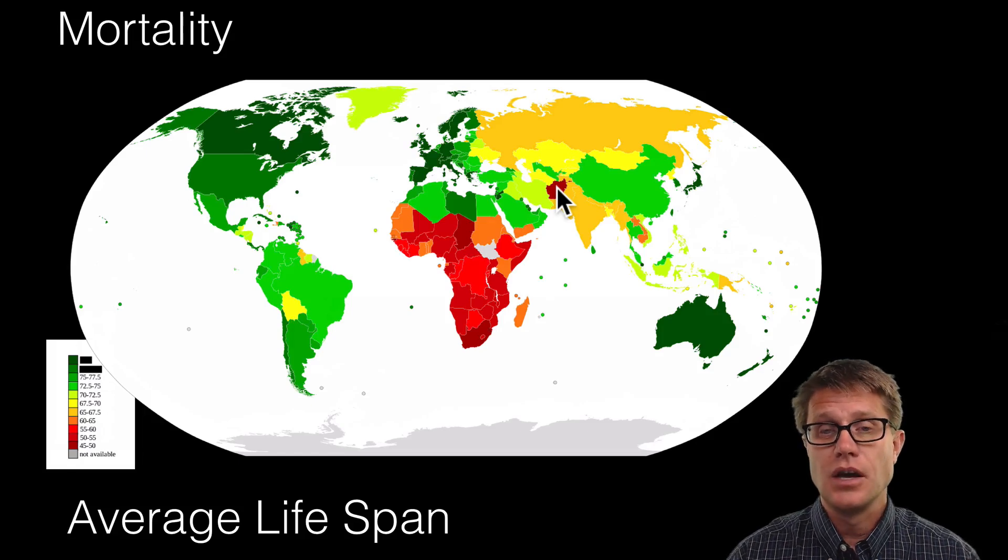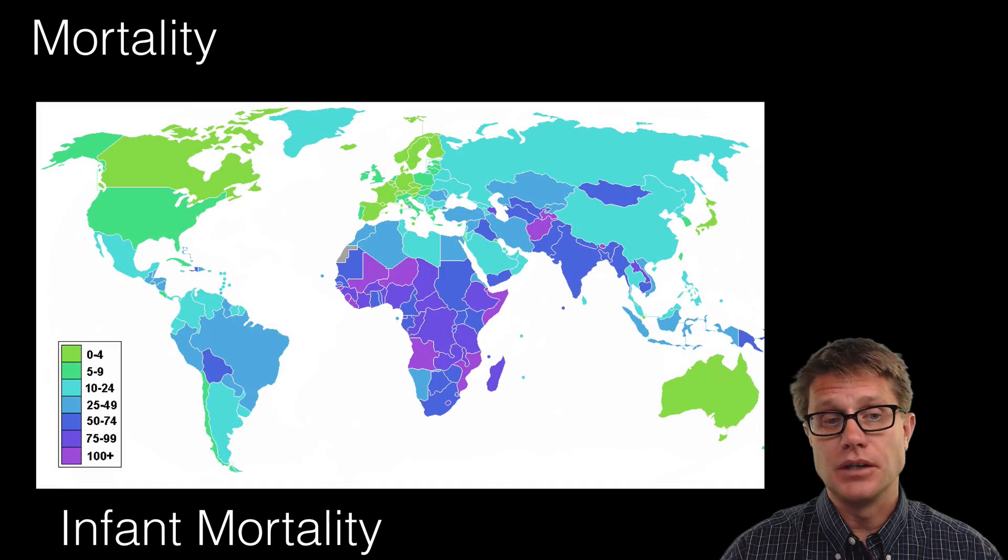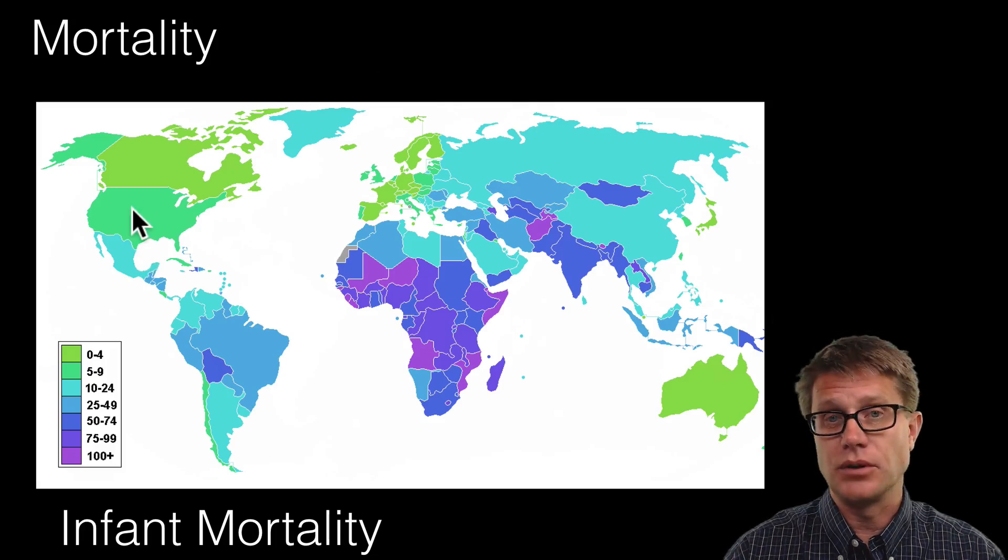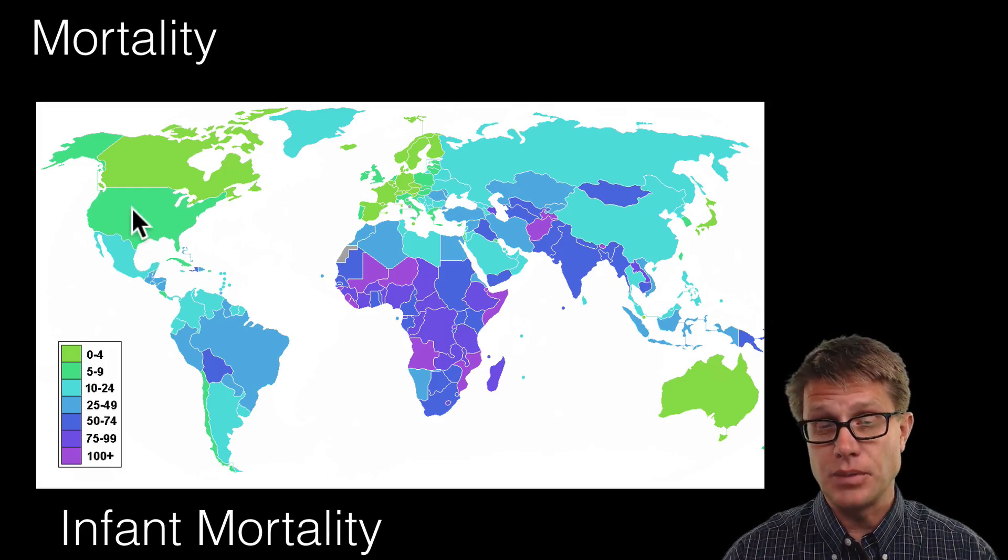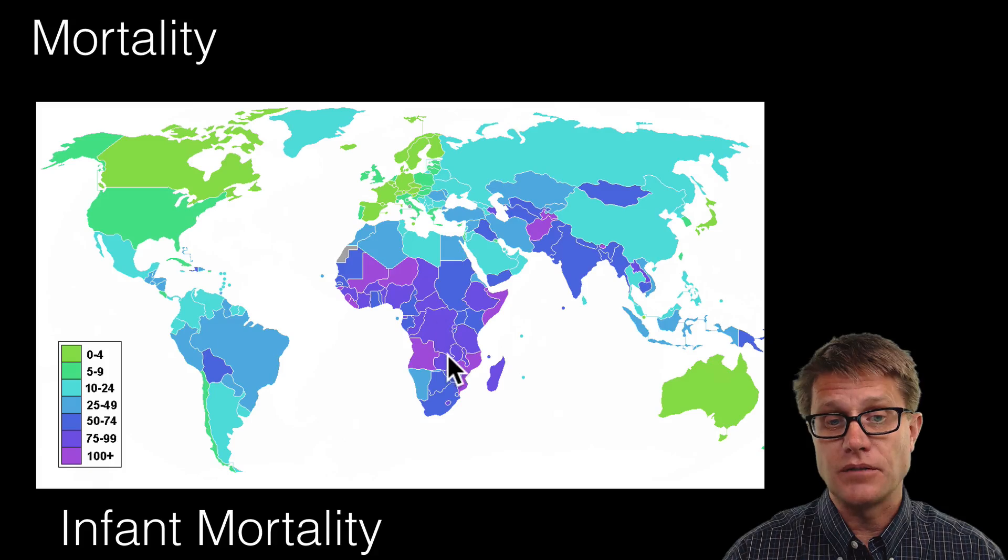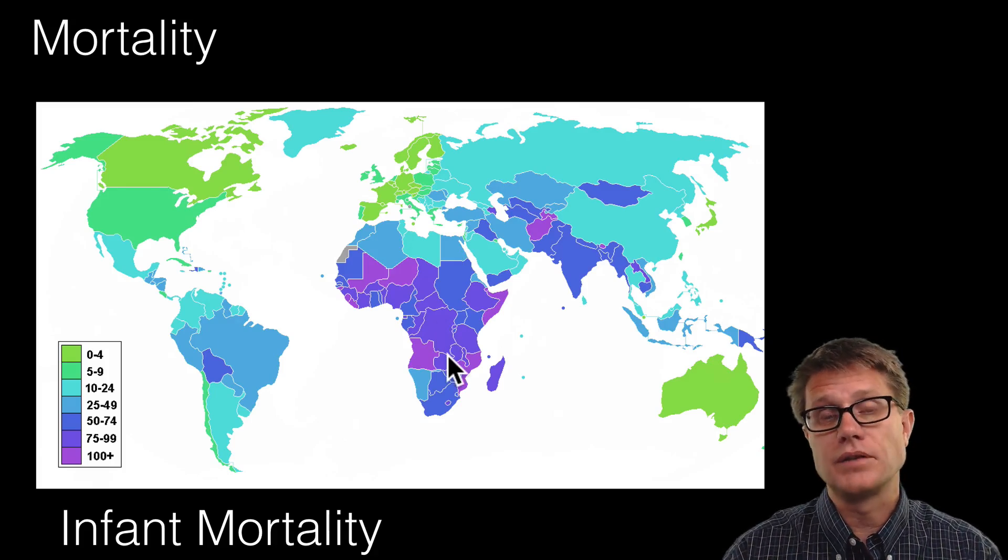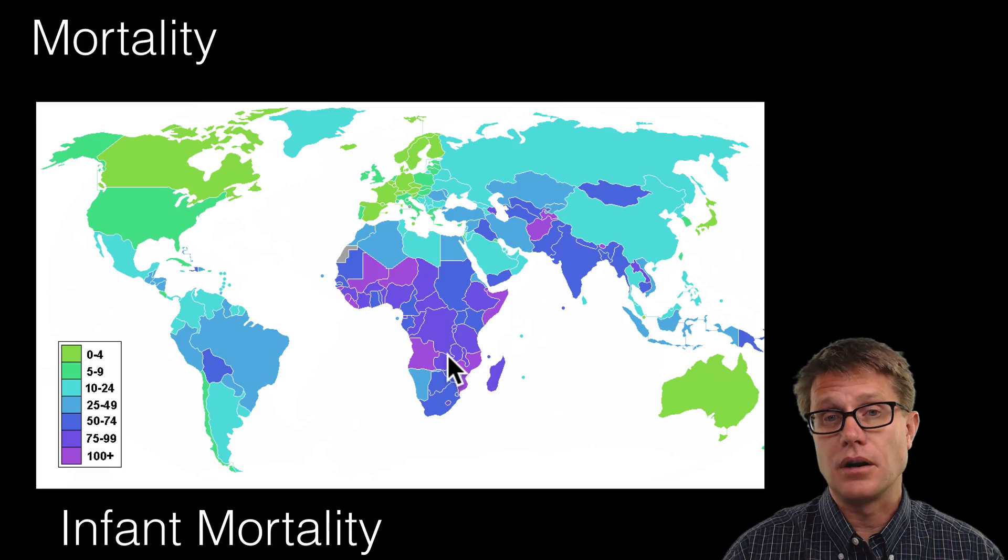One of the best measures of how developed a country is, is the infant mortality rate. So in the U.S. that value is going to be between 5 and 9 per thousand people. But look at this. In some parts of Africa that number is going to be approaching 100. In other words 1 of 10 infants that are born are going to die.